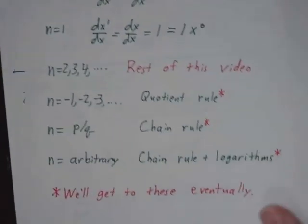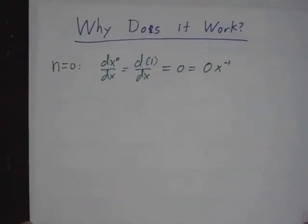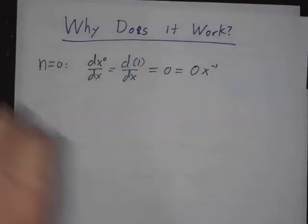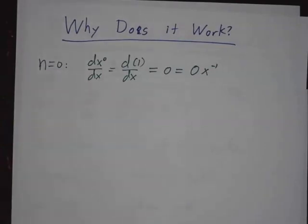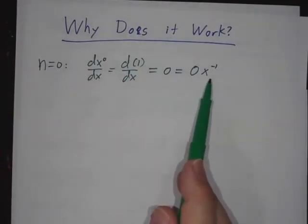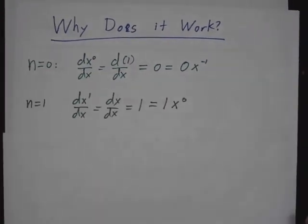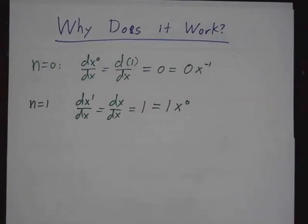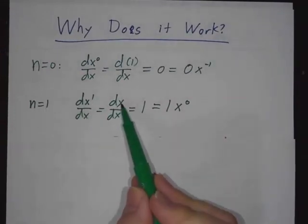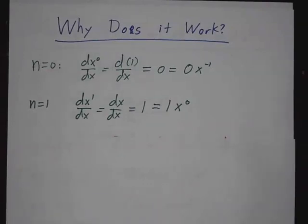So why does it work? Well, when n equals 0, it's pretty easy. Because x to the 0 is just 1. And the derivative of a constant is 0. And that's 0x to the negative 1. So it works when n equals 0. And when n equals 1, the x to the first is just x. And the derivative of x with respect to x is 1. And that's 1x to the 0. So far, so good.